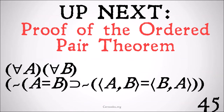Up next, we are going to use some of our definitions and our understanding of ordered pairs to do a tough proof. This is the proof of the ordered pair theorem. The ordered pair theorem states that you can't switch the values within an ordered pair — basically, for all a and all b, if it's not the case that a equals b, then it's not the case that the ordered pair a, b is equal to the ordered pair b, a. Give that a try on your own.